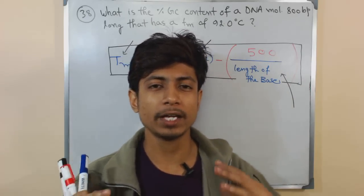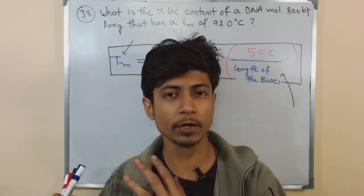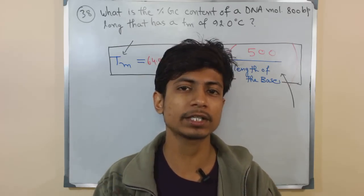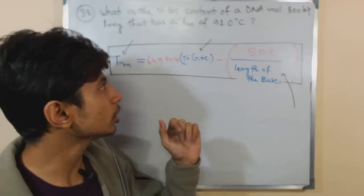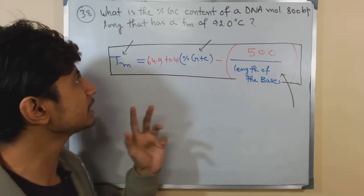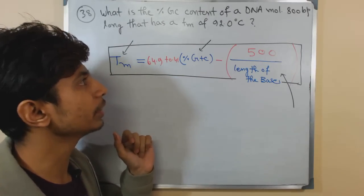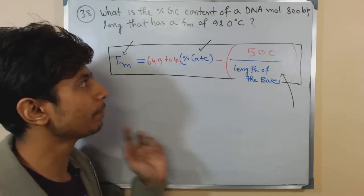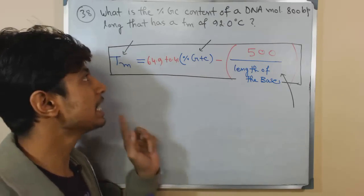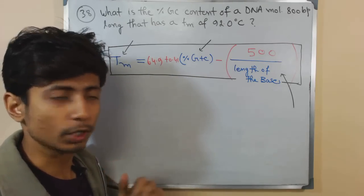Welcome again friends, welcome to biology problems. Another math problem for you, the same type of math that you've dealt with previously. So the question is, what is the percentage GC content of a DNA molecule 800 base pair long that has a Tm of 92 degrees Celsius? Tm is melting temperature, you all know that, right?